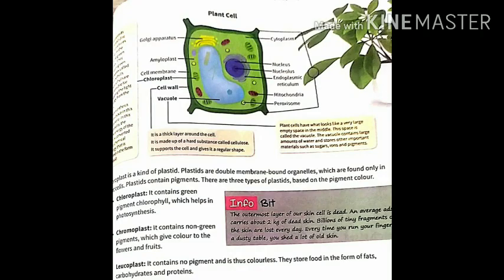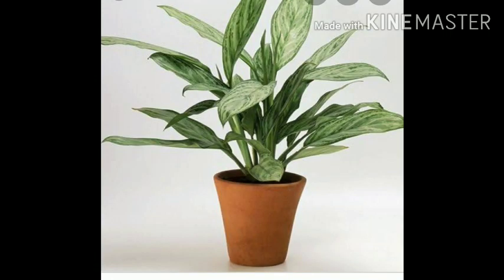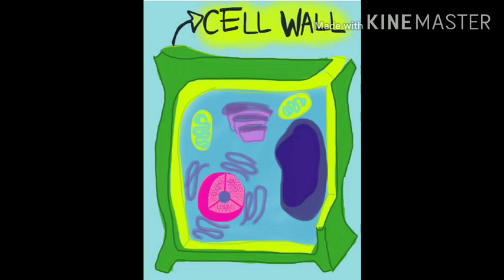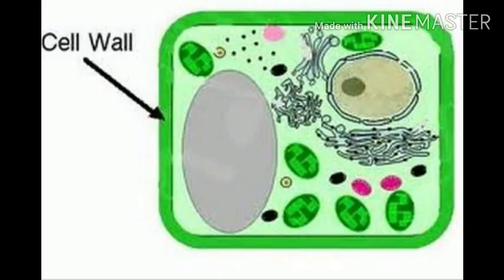Next comes the plant cell. Similar to animal cell, plants also have cytoplasm, cell membrane, nucleus and other cell organelles like mitochondria, endoplasmic reticulum, etc. But it is different from animal cell as it has a cell wall, which is a thick, tough, flexible and sometimes rigid layer around the cell membrane. It provides the plant cell with structural support and protection, and is made up of a hard structure called cellulose.